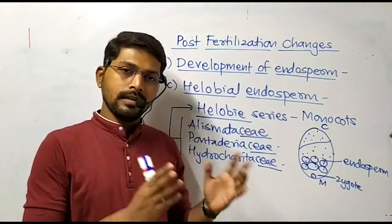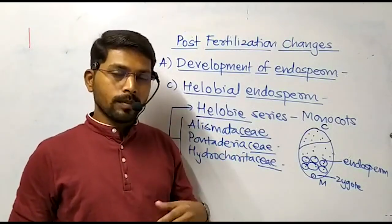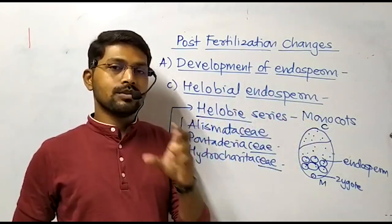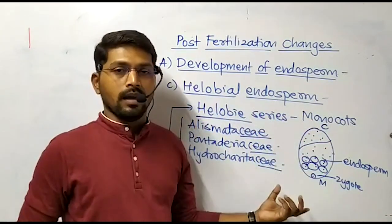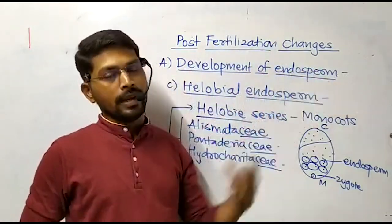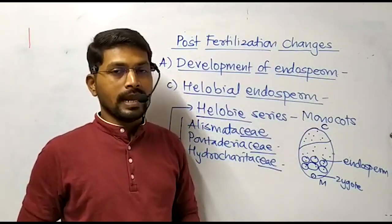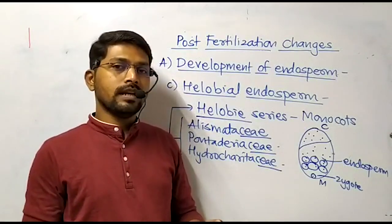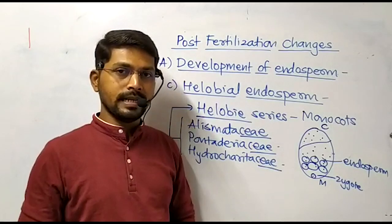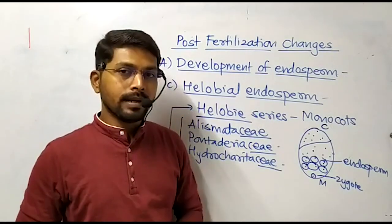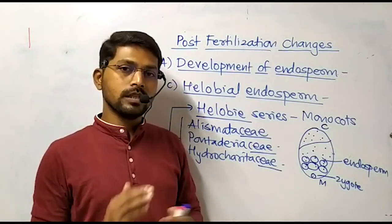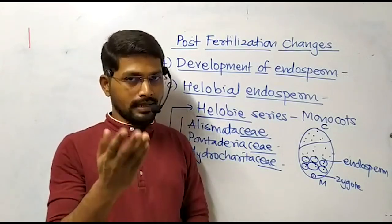So these are three different types of endosperm: nuclear endosperm, which is most common and seen in dicots as well as monocots; cellular endosperm, which is less common and quite rare, seen only in dicots; and halobial endosperm, which is also rare and only seen in the restricted group of angiospermic plants belonging to the Halobie series of monocots. This completes the development of endosperm. Endosperm is a nutritive tissue that provides nourishment to the developing embryo. If any remains after embryo growth inside the seed, it is utilized in the development or growth of the seedling at germination.